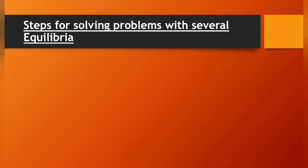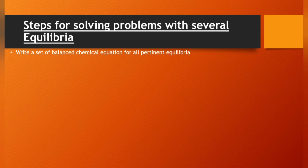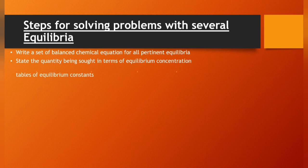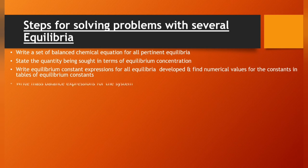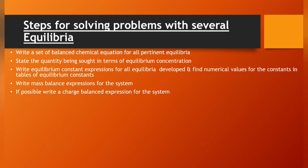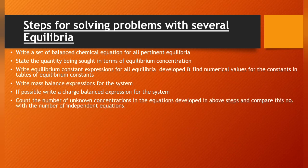Steps for solving problems with several equilibria. First, write a set of balanced chemical equations for all pertinent equilibria. State the quantity being sought in terms of equilibrium concentration. Write equilibrium constant expressions for all equilibria developed and find numerical values for the constants in tables of equilibrium constants. Write mass balance expressions for the system. If possible, write a charge balance expression for the system.